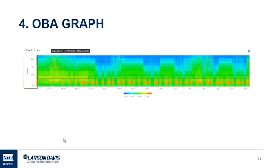OBA — octave band analysis — spectrum graphs have frequency on the y-axis versus time on the x-axis, with amplitude color-coded. This picture of sound gives you the tools to identify signatures of sound sources. You can identify a sound once with a sound recording, listen to it, look at the OBA signature, and from then on identify the sound source without having to listen to each one — you can see it visually.